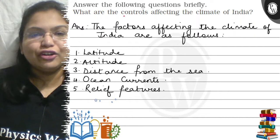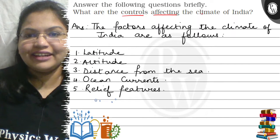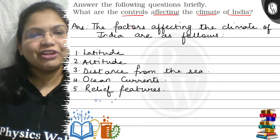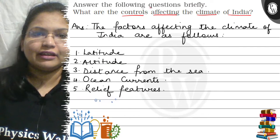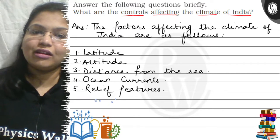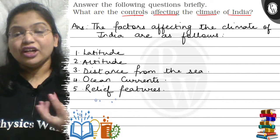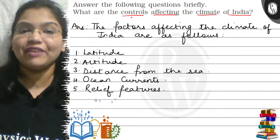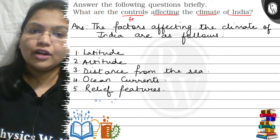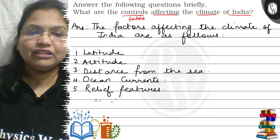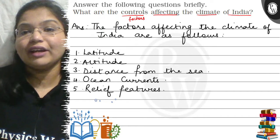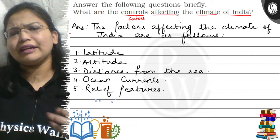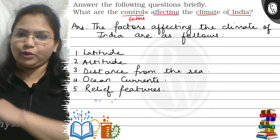What are the controls affecting the climate of India? First of all, let's understand the question. Controls are basically factors which affect our climate. So the controls are basically factors that affect the climate of India.